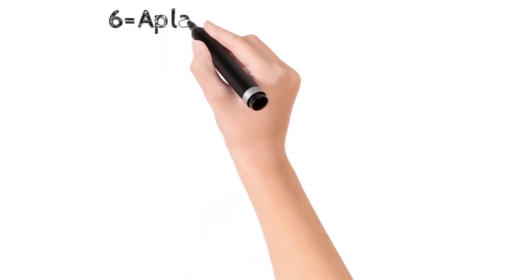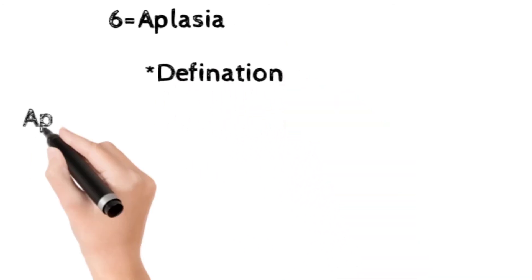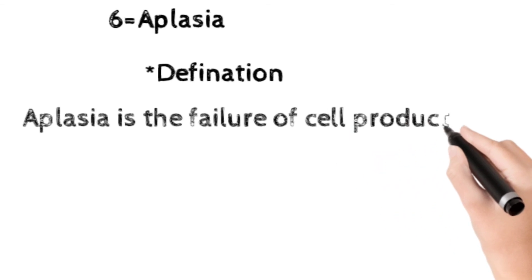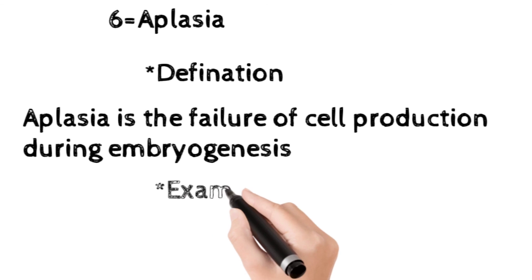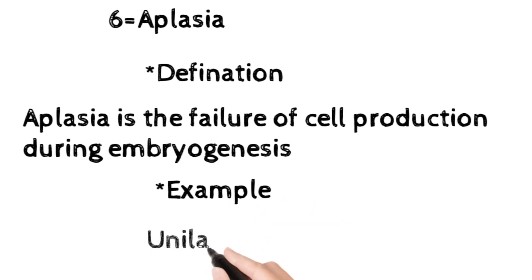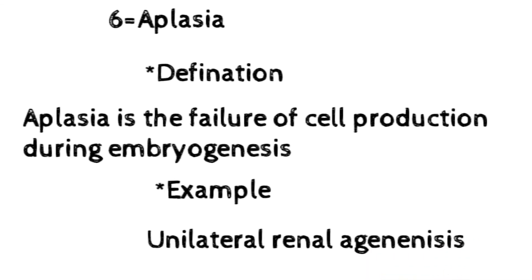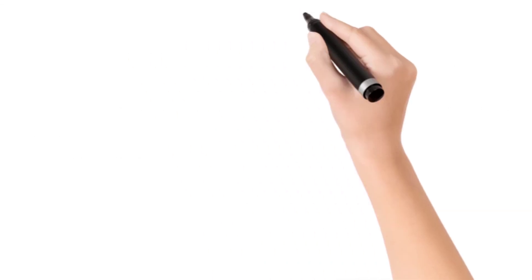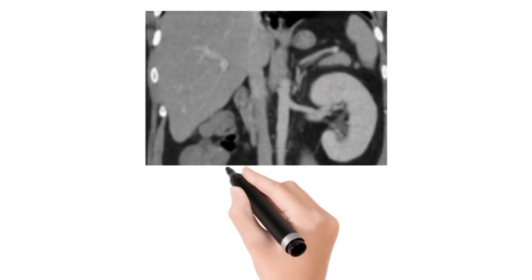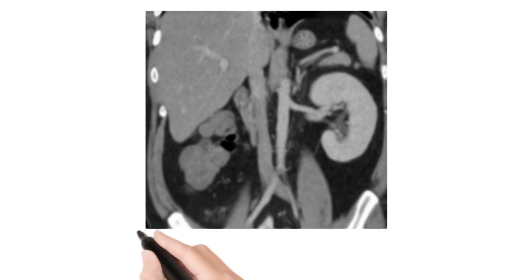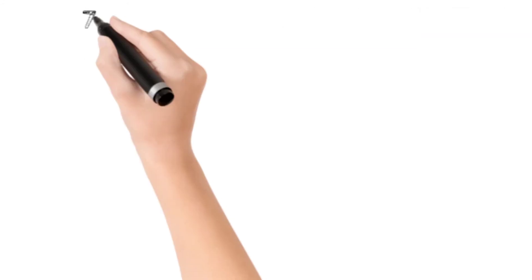Now come to the sixth cellular adaptation: aplasia. 'A' means without. The definition: aplasia is the failure of cell production during embryogenesis. For example, unilateral renal agenesis — one kidney is absent. In the diagram, the right kidney is absent — this is aplasia because during embryogenesis there was no cell production.